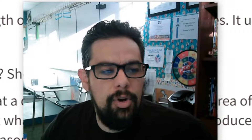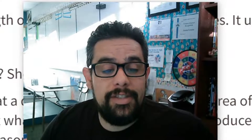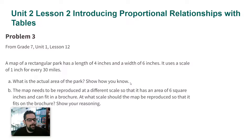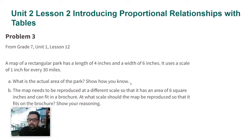All right ladies and gentlemen, Mr. Urutia here. We're going to go over Unit 2 Lesson 2 Practice Problem number 3. A map of a regular park has a length of four inches and a width of six inches. It uses a scale of one inch for every 30 miles. Part A: what is the actual area of the park? Show how you know.